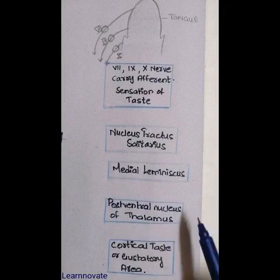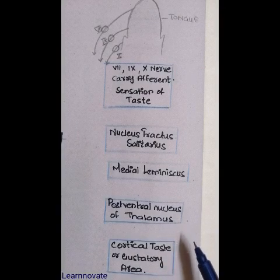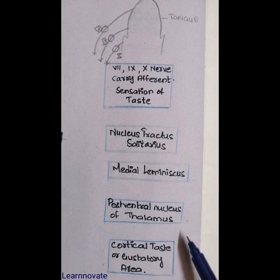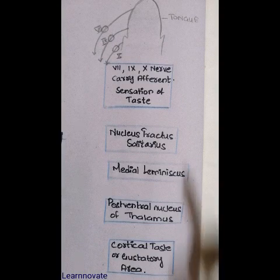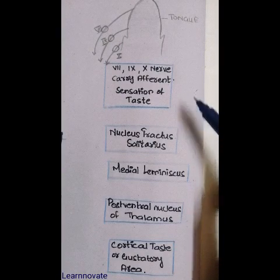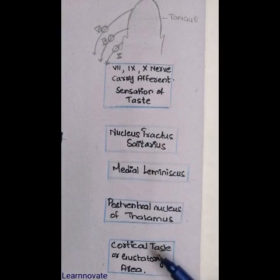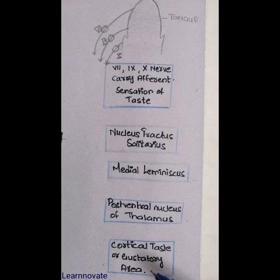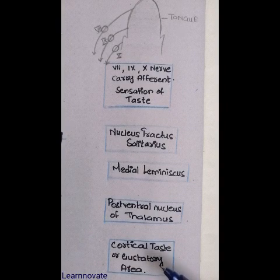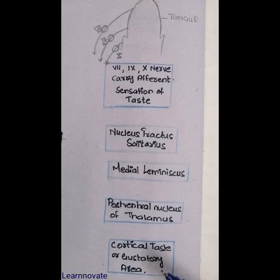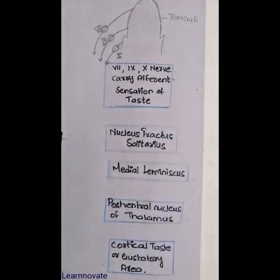From the tongue towards the cerebral cortex it is not easy, passing through other roots of the brainstem. There is a step-by-step pathway passing from the tongue towards the gustatory area located in the cortex. We will start from the taste sensation carried by the nerve fibers of the facial, glossopharyngeal, and vagus nerves.